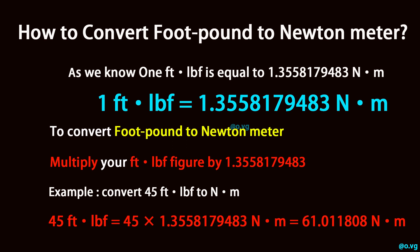To convert foot-pound to newton-meter, multiply your foot-pound figure by 1.3558179483.